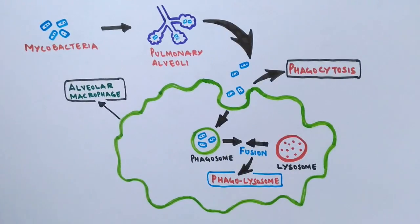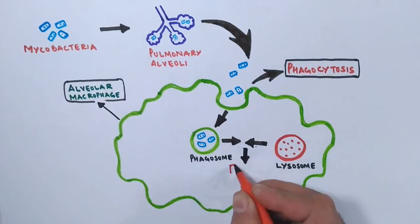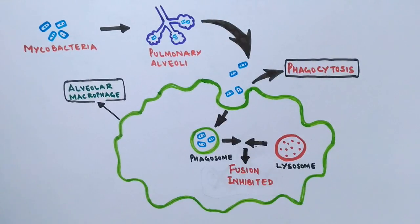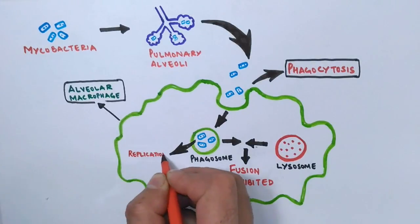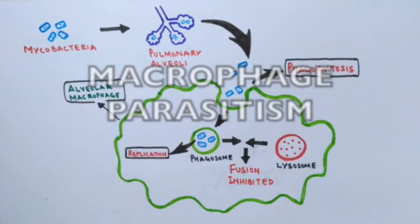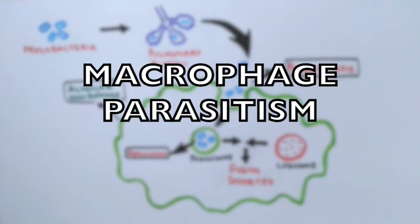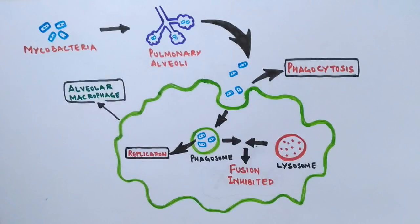But these immune functions and processes are inhibited by the mycobacteria. So neither there is any fusion nor any formation of phagolysosome, and the bacteria survives in macrophage and replicates in the immune cell. We call it macrophage parasitism, where the host is our immune cell, the macrophage, and parasite is the mycobacterium tuberculosis.